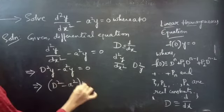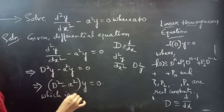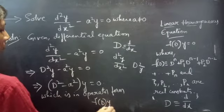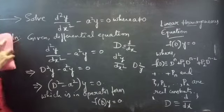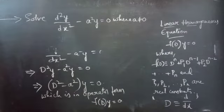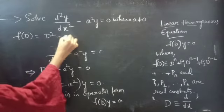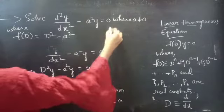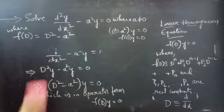Taking y common from these two terms, we get (D² minus a²) times y equals zero, which is in operator form f(D) times y equals zero. We are given a linear homogeneous equation of this form. Comparing the two equations, we get f(D) equals D² minus a².